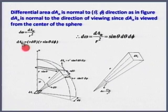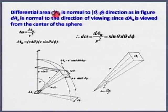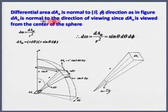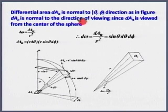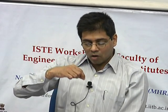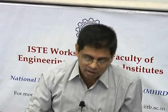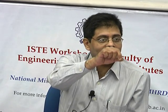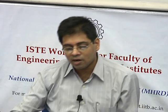I will proceed further. So, d omega therefore, I will define differential area dAn as normal to the theta-phi direction as shown in the figure. dAn is normal to the direction of viewing, since dAn is viewed from the center of the sphere. I draw a line which is going to intersect the center of the sphere — from the center of the earth to the center of the area outward normal.